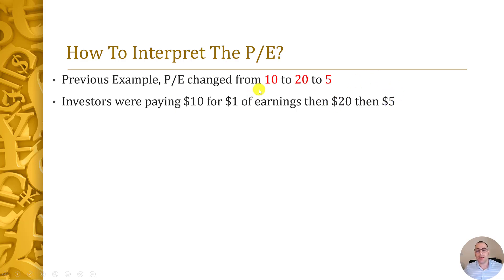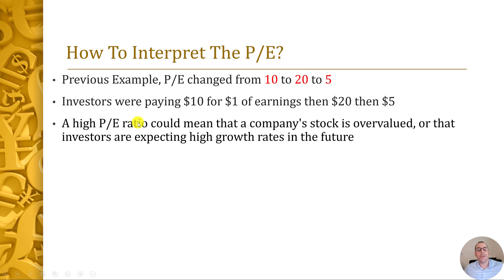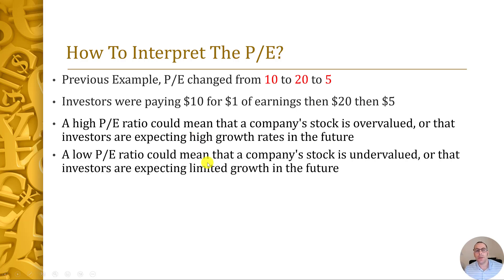So you would have been better off waiting till the stock price went down in this case. But maybe it went down for a reason — maybe the company's really struggling. Maybe when the PE was 20, it was because they had a big contract in place and then the contract fell through and the stock crashed. So when you see a high PE, it may mean the stock is overvalued, or it could mean the company has really high growth potential. On the flip side, when you see a low PE, that means the stock may be really undervalued or investors are expecting limited growth in the future.